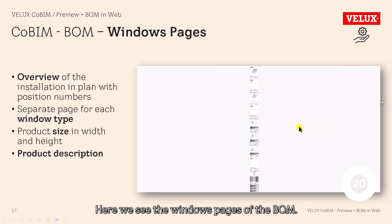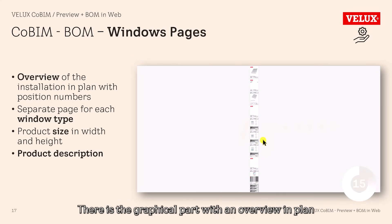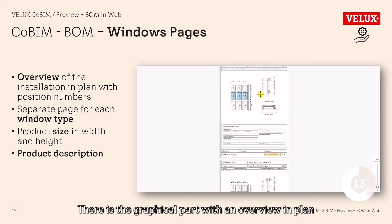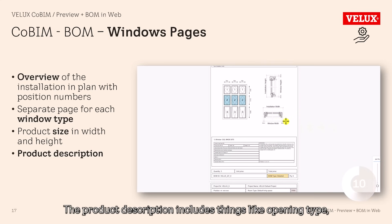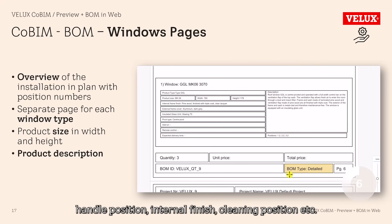Here we see the windows pages of the BOM. For each product type, there is a dedicated page. There is the graphical part with an overview in plan and sections with dimensions. The product description includes things like opening type, handle position, internal finish, cleaning position, etc.